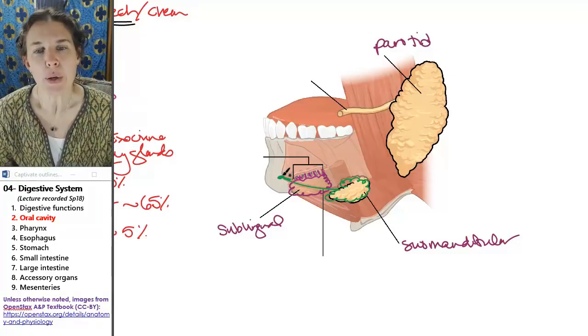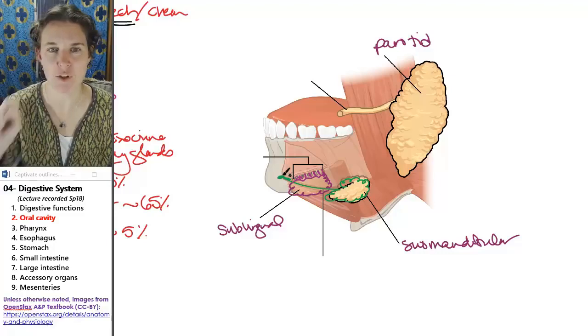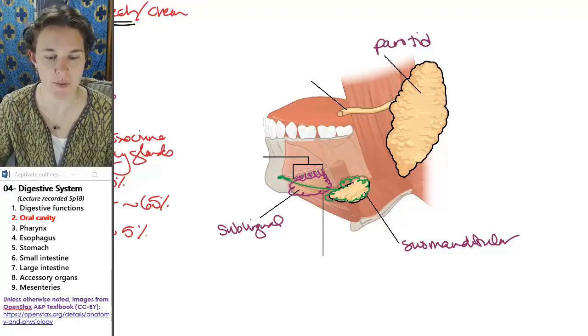Look at all these ducts that come out of the sublingual gland and line all the space next to your tongue. So there you go, some salivary glands.